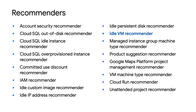Recommendations are made based on cloud monitoring data and are continuously being updated. Another example is enforcing the best practice of least privilege. This includes making sure that users only have the permissions that they actually need and use. The IAM recommender will spot any excess permissions granted to any accounts and offer alternative roles and permissions to grant instead.